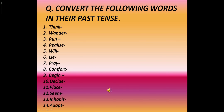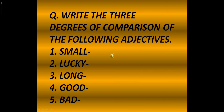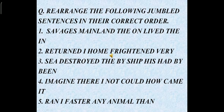Now it's time for exercises. The first exercise asks you to convert 14 given words into their past tense forms. The second exercise asks you to write the three degrees of comparison for five adjectives: small, lucky, long, good, and bad. The third exercise asks you to rearrange jumbled sentences in their correct order — refer to the chapter carefully and read the text before attempting these.